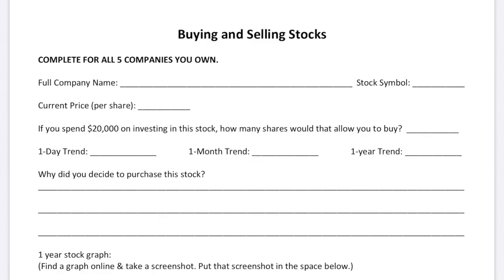On the stock activity page, you're going to write the company's full name and do this for all five companies. You'll record the full company name, the stock symbol, the current price — for Apple it was about $242.21 — and how many shares you'd get if you spent $20,000. For Apple, that was about 82 shares.